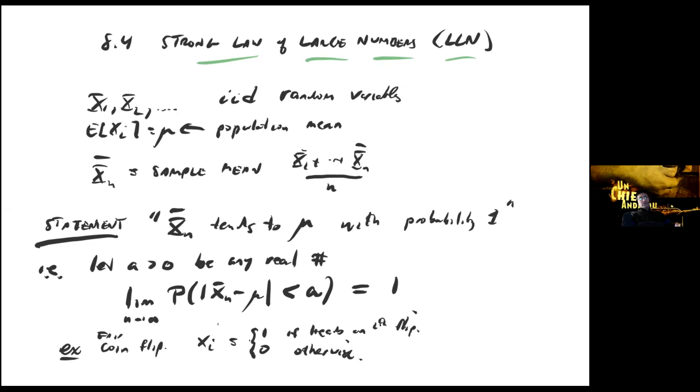Suppose I flip it a million times. On average you would expect 500,000 times heads to appear. It's not exactly going to be 500,000 times you're going to get heads, but it's going to be pretty close to 500,000 times. That's really what happens as the number of flips increases. If I go to a billion or a trillion...